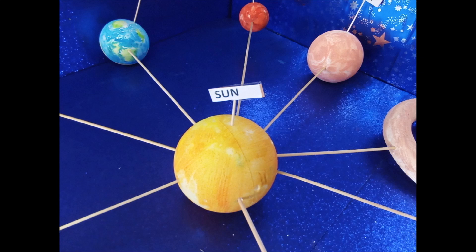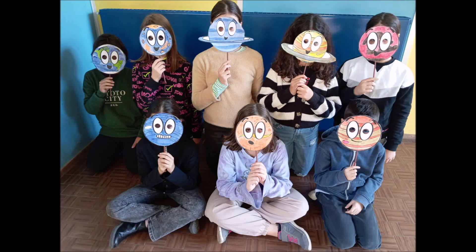Look, this is the sun. How many planets are there? In our solar system there are 8 planets. Let's discover them all.